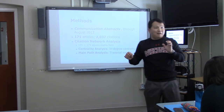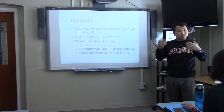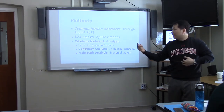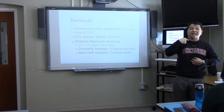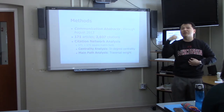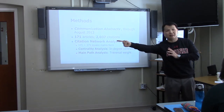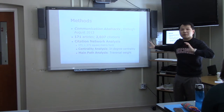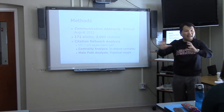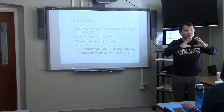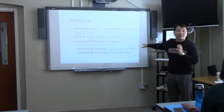In-degree centrality works like this: if one article is cited by other articles, the arrow comes toward it — that's in-degree. If I cite other articles, the arrow goes outward — that's out-degree. The basic assumption is that if an article is cited by many other articles, the importance or influence of that article increases. I calculated in-degree centrality scores for all 171 articles to identify the most prominent articles in the social capital communication literature.